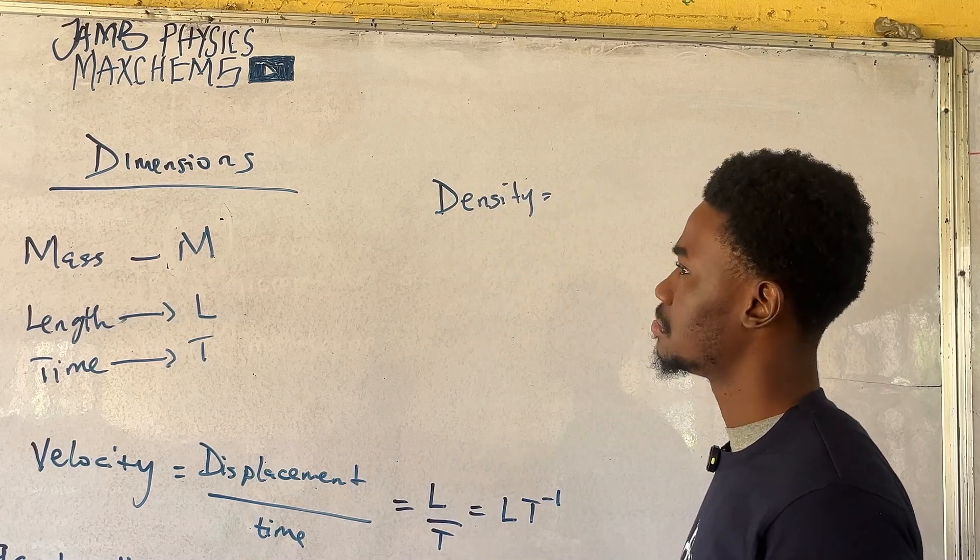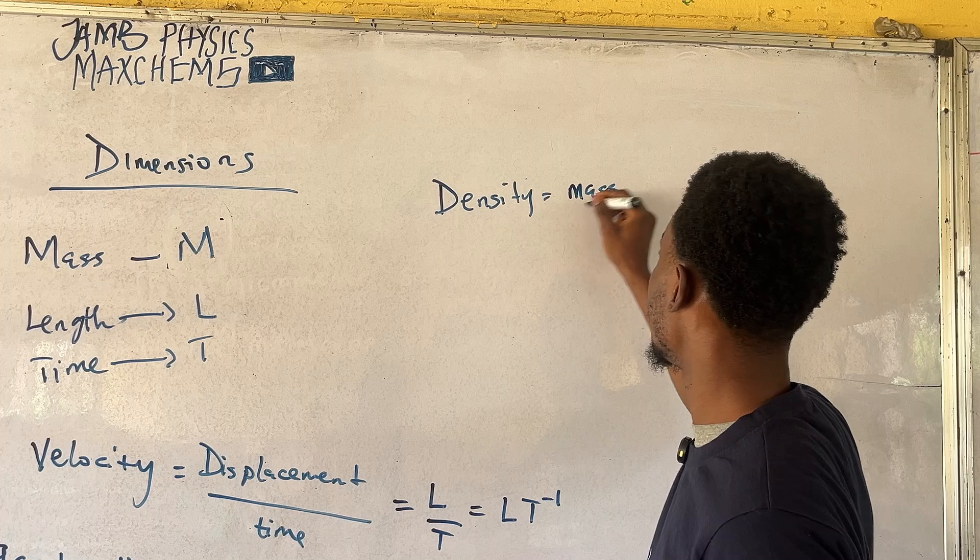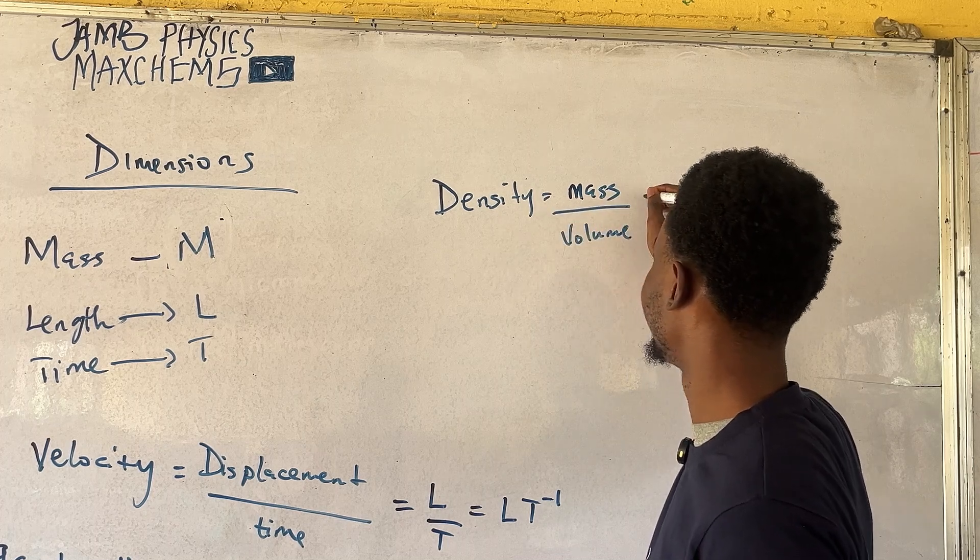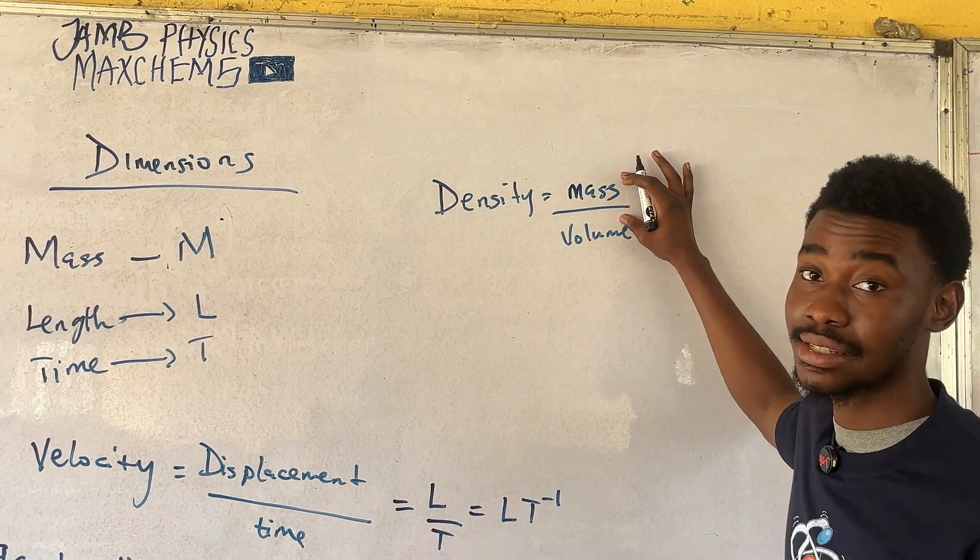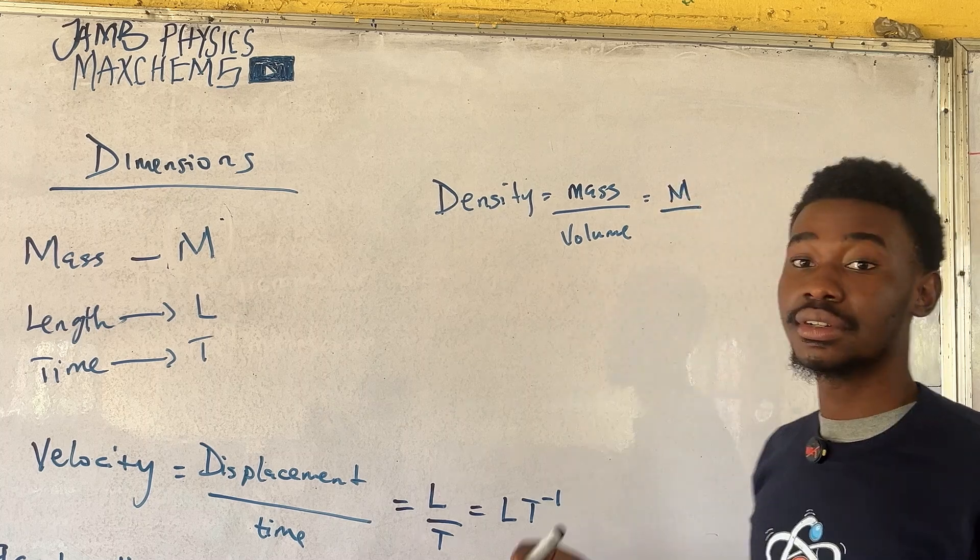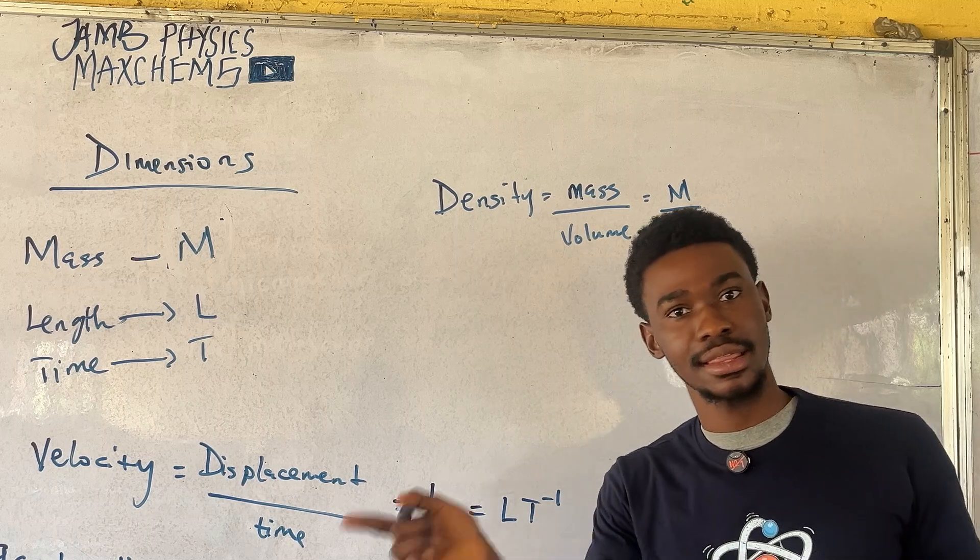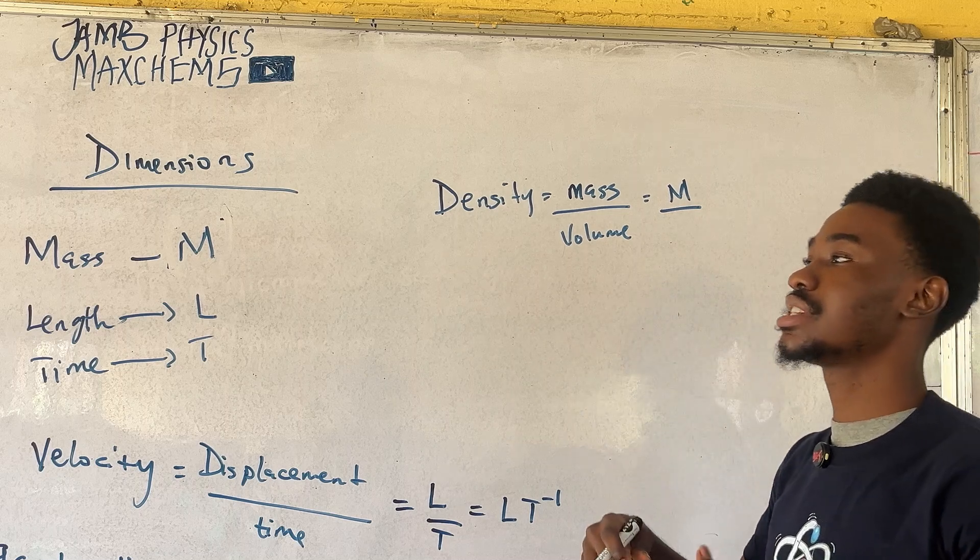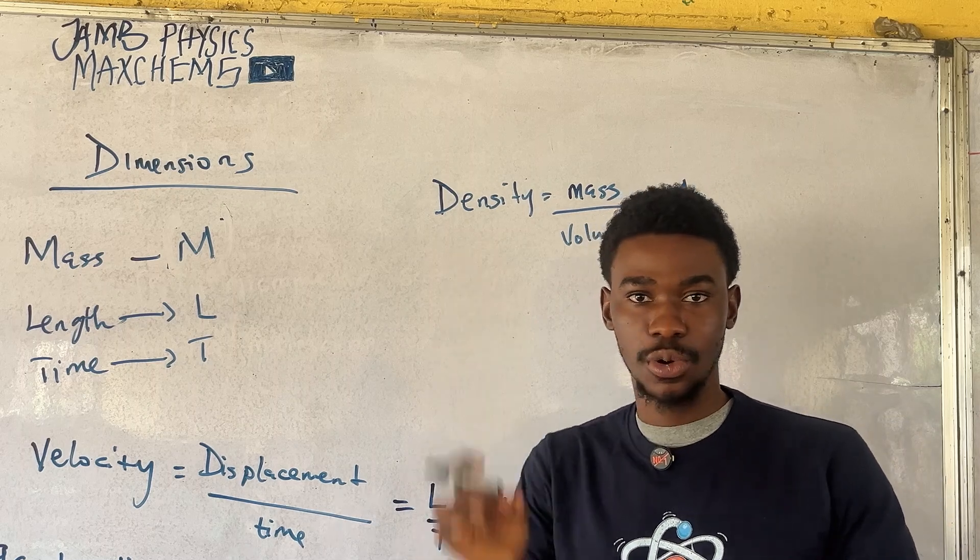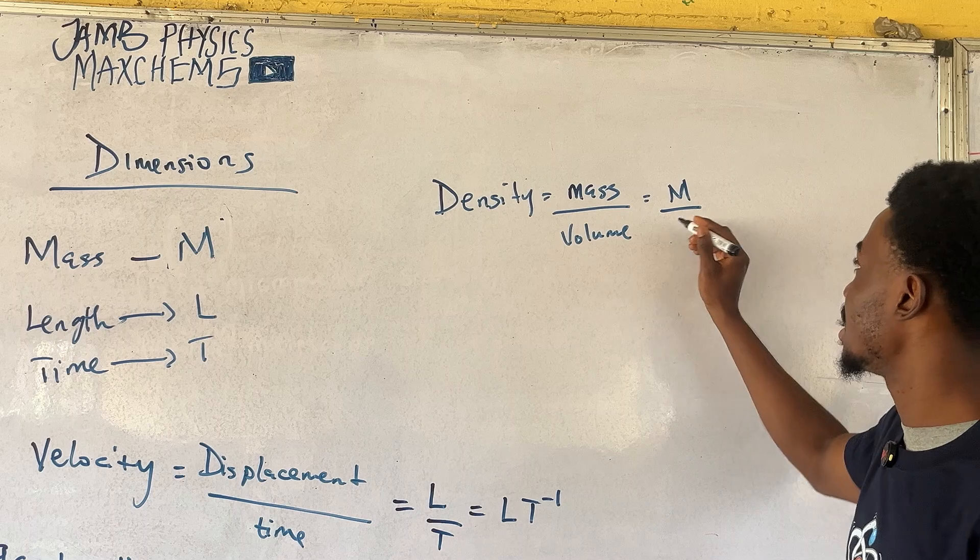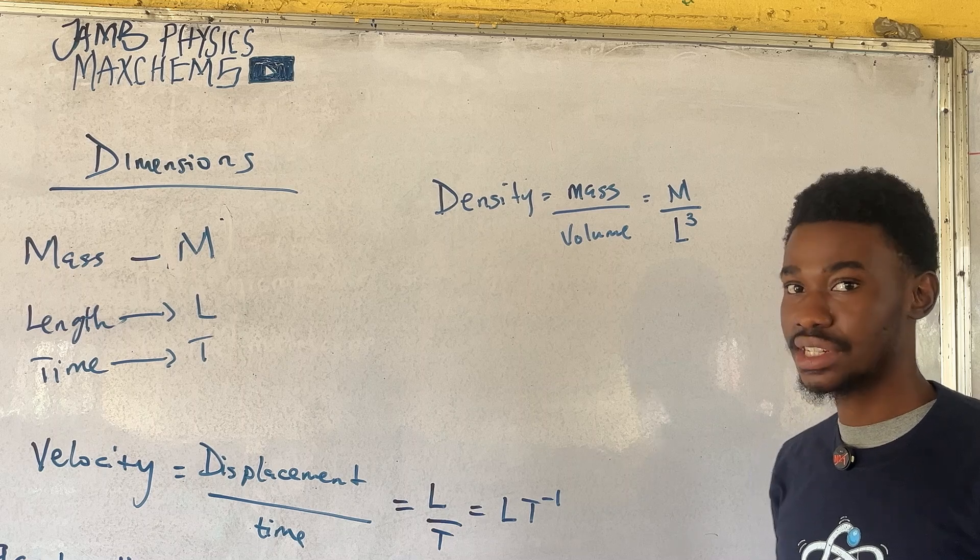Now, before we get the dimension, remember, we have to write the formula first. The formula for density is mass per unit volume. Now, don't get confused here. Remember mass. We said the dimension for mass is M. And what is volume? You can express volume in terms of area multiplied by another length. So, or you can just say when we have a dimension and you want to multiply volume, we are basically multiplying three lengths or three dimensions. So, you can say volume is length multiplied three times. Do you understand?